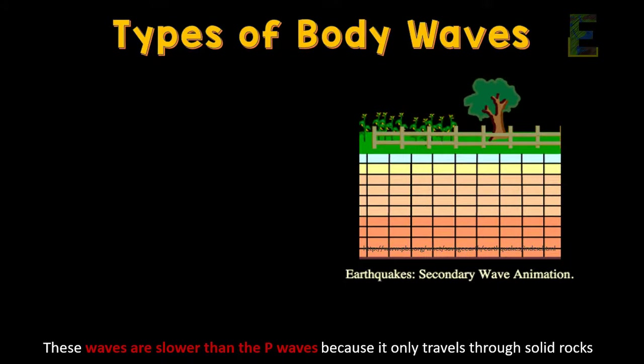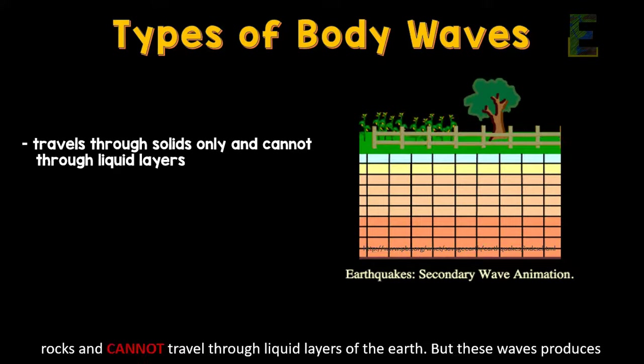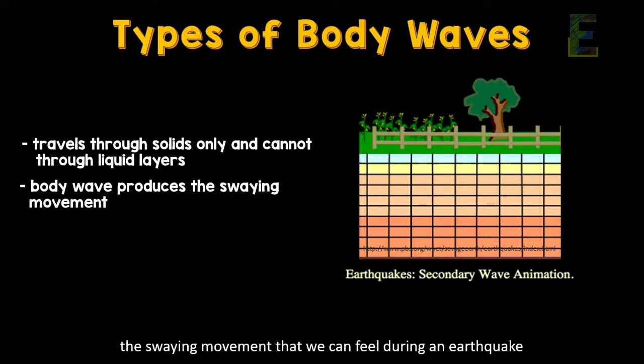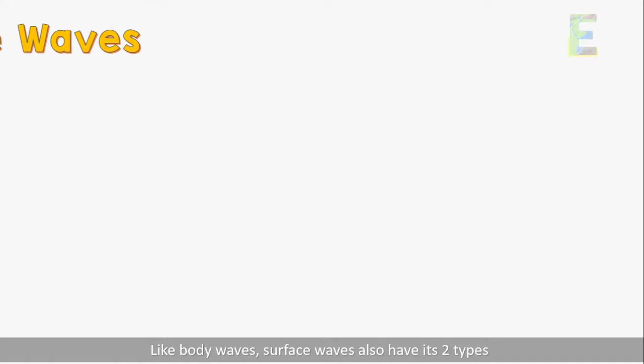The second type is the secondary waves, or S waves. These waves are slower than the P waves because they only travel through solid rocks and cannot travel through liquid layers of the Earth. However, these waves produce the swaying movement that we can feel during an earthquake.